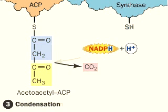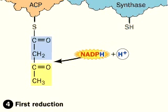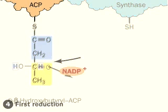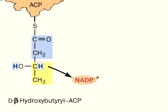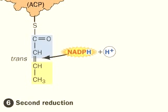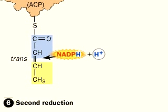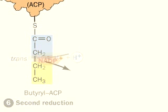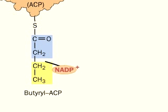In step 4, NADPH plus H+ reduce the molecule, producing D-beta-hydroxybutyryl-ACP. Step 5 is a dehydration giving rise to an unsaturated fatty acid, crotonyl-ACP. In step 6, a second reduction saturates the molecule again, producing butyryl-ACP.